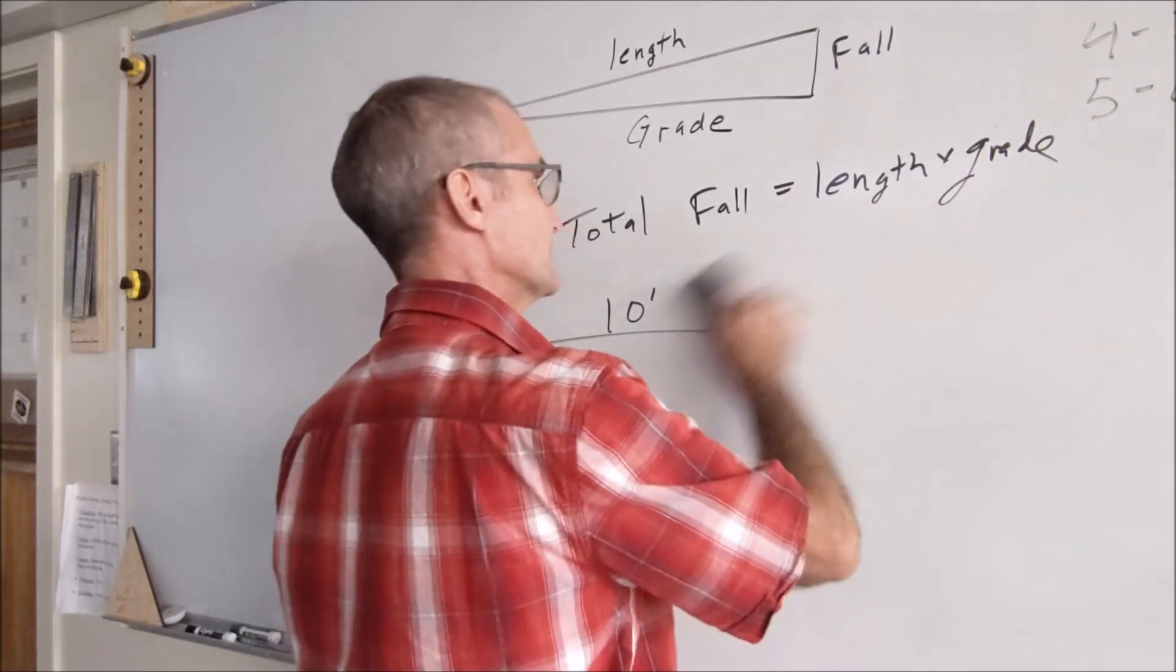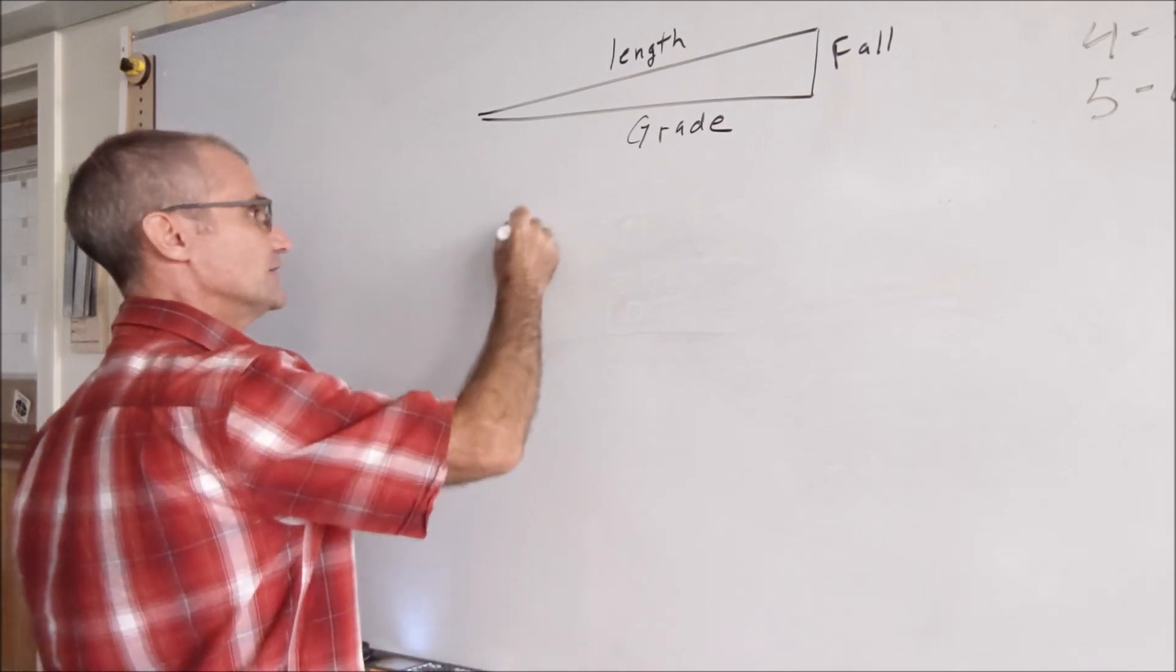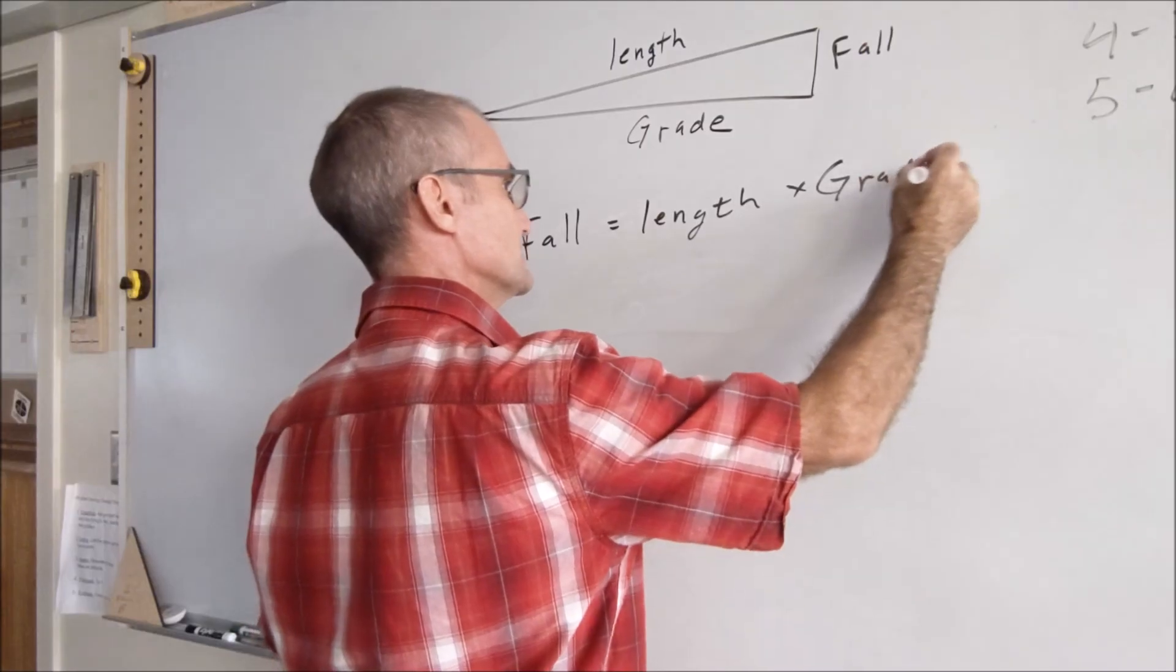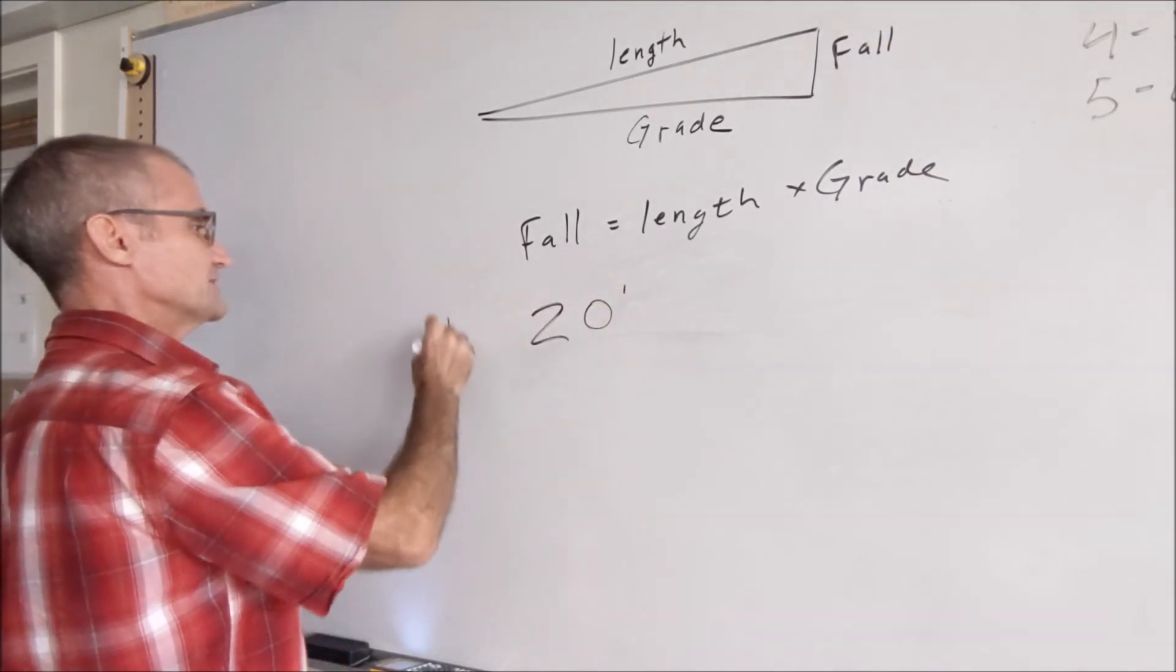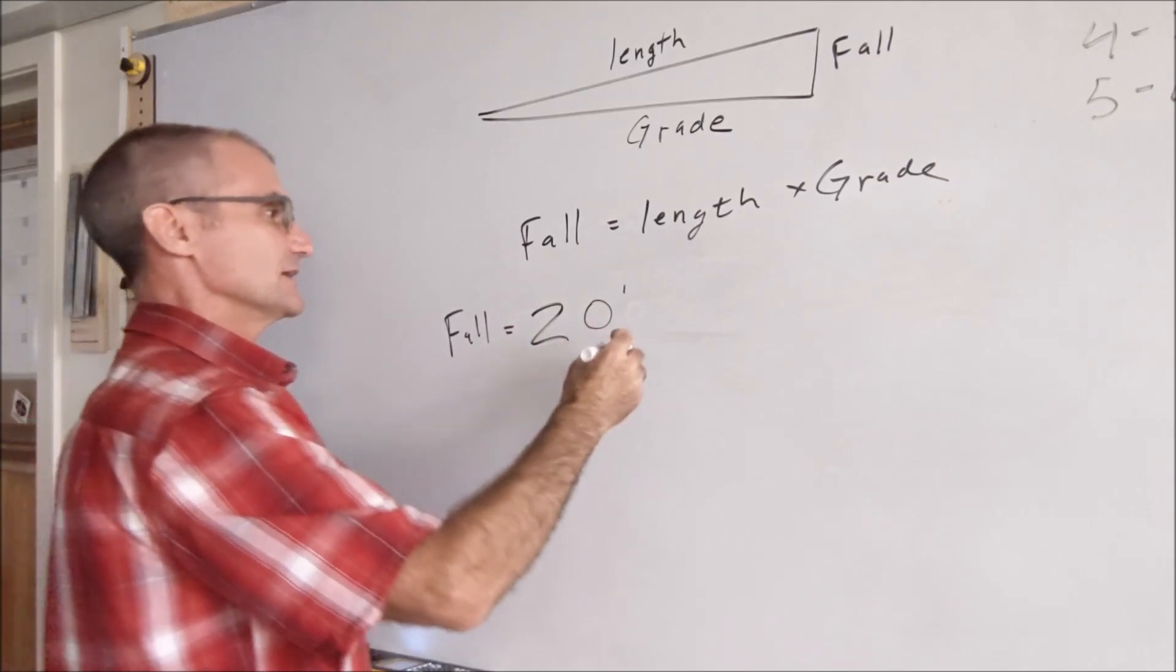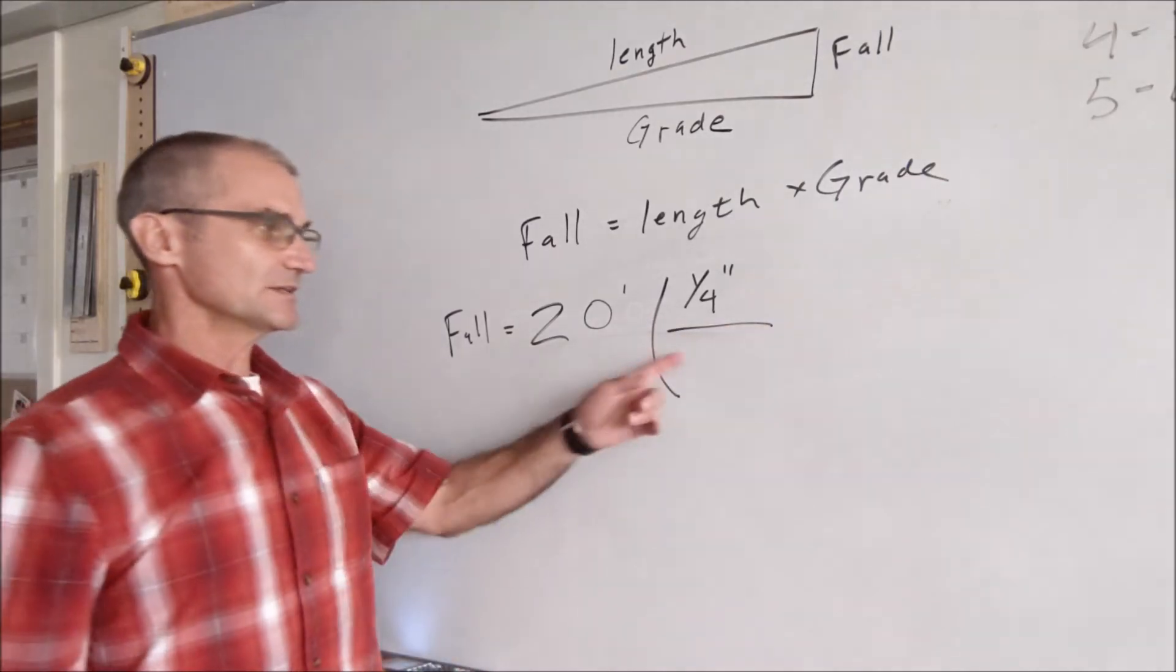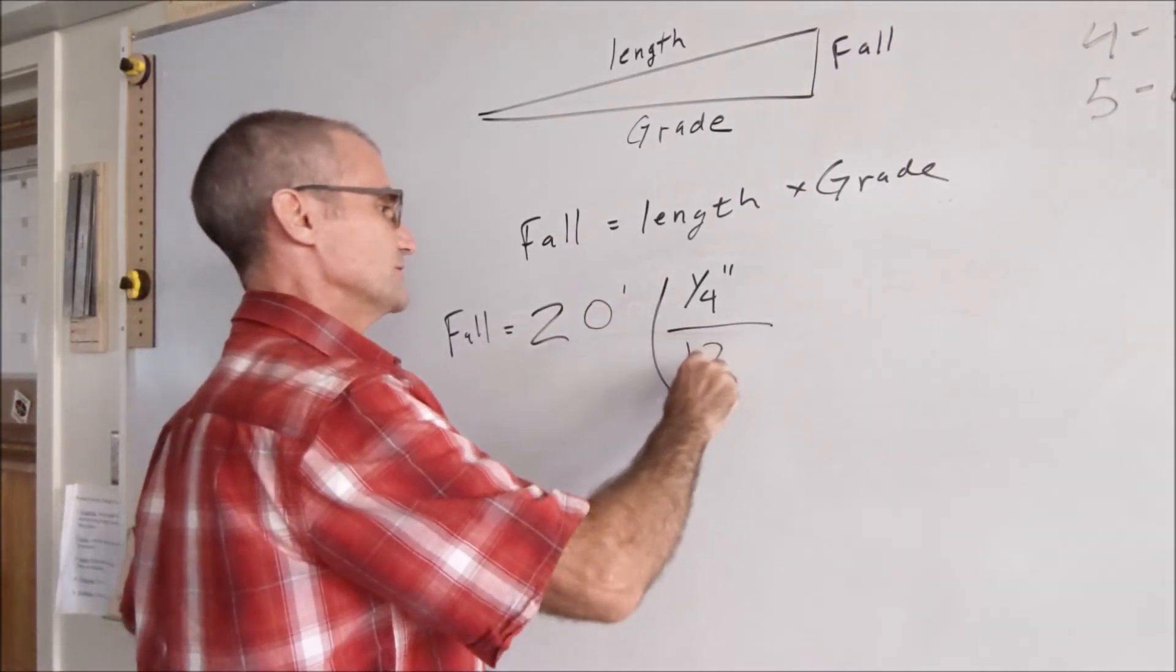Let's do another one. So again, total fall is equal to the length of the pipe times the grade. So now let's say I have a 20 foot long pipe. How much is the fall when I have a 20 foot pipe? And the grade is a 1⁄4 inch per foot. So I have to do this, a 1⁄4 inch per foot. But my units have to be the same. So I have to do 1⁄4 inch divided by 1 foot, 12 inches.